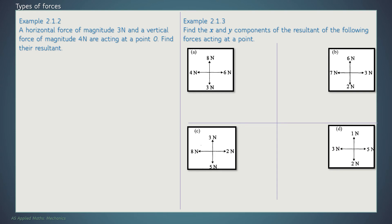Looking at example 2.1.2, a horizontal force of magnitude three newtons and a vertical force of magnitude four newtons are acting at a point O. Find their resultant. If we were to draw this into a diagram, we've got a horizontal force from the origin acting across, which is three newtons, and then a vertical force acting upwards, which is four newtons.